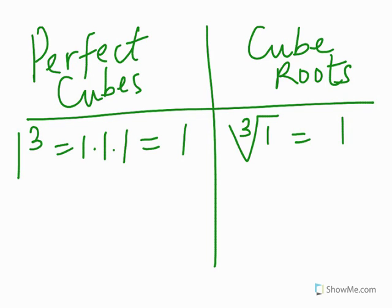Now, do you see how we write cube root? If you don't see a number in between the radical symbol, that means we mean square root. If you see 3, it means cube root.